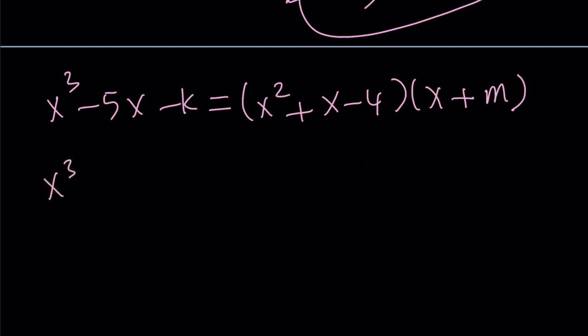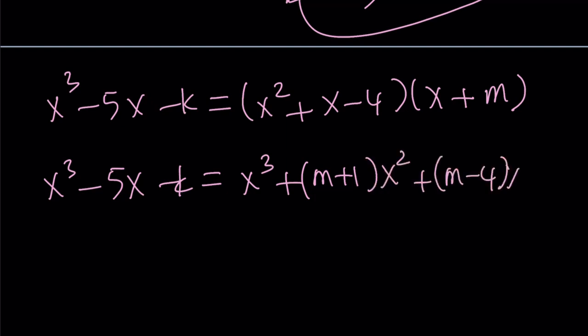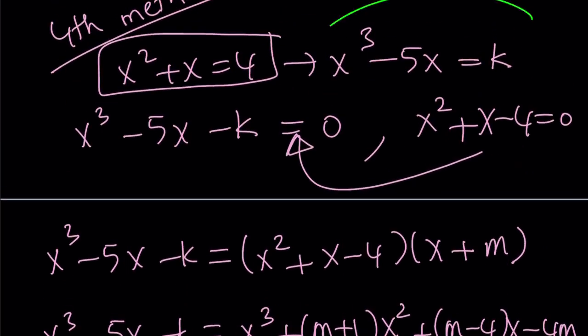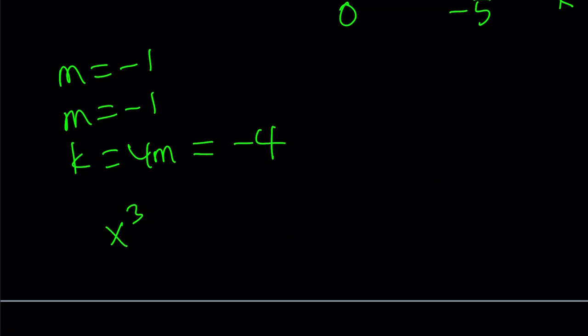Let's distribute: x cubed minus m plus 1 times x squared plus m minus 4x minus 4m. Set them equal to each other. These are polynomials. The coefficient of x squared must be 0. The coefficient of x must be negative 5. The constant term must equal k. From here, we get m equals negative 1, and k equals 4m, which means k equals negative 4. What is k? k is what I'm looking for. k equals negative 4 implies x cubed minus 5x equals negative 4 as the answer.